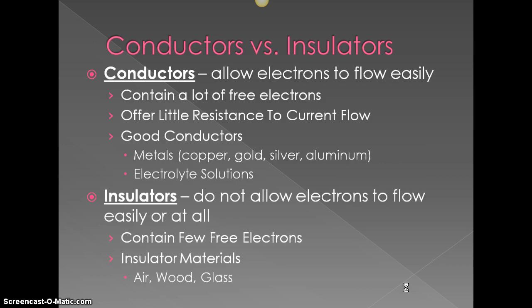Conductors allow electrons to flow easily. They contain a lot of free electrons and so there's very little resistance to current flow. Good conductors, some examples are metals, copper, gold, silver, aluminum, and then electrolyte solutions. So we are a good conductor. We have electrolytes in our body. We conduct electricity very well, which is why you can be electrocuted.